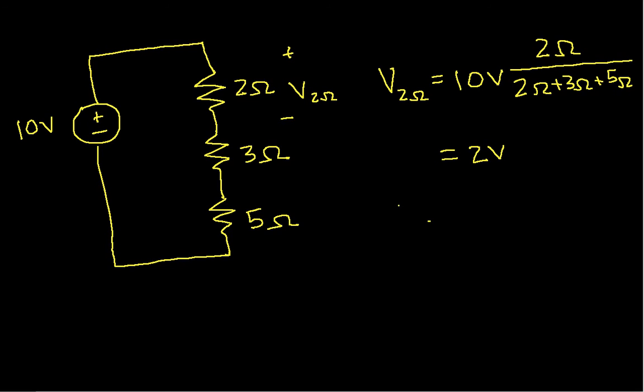Similarly, I could get the voltage across the 3 ohm resistor, which is going to be 10 volts times 3 ohms over 2 ohms plus 3 ohms plus 5 ohms. And this turns out to be 3 volts. And I'll leave it as an exercise to the interested viewer. This is going to be 5 volts. Well, I think with that we'll stop.